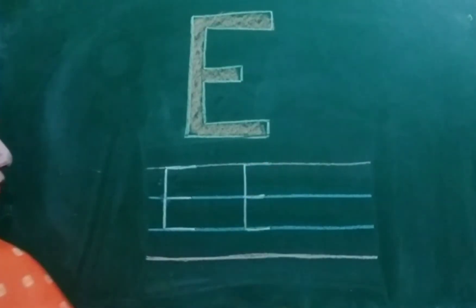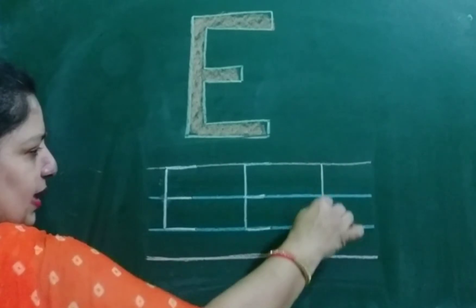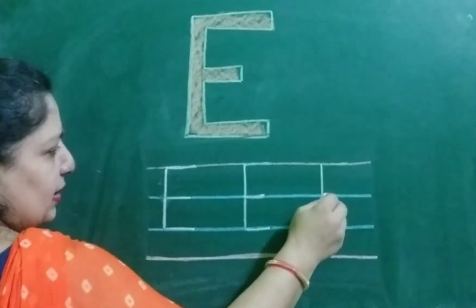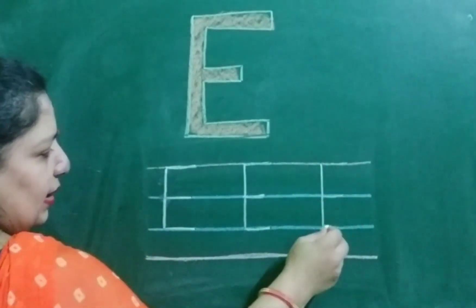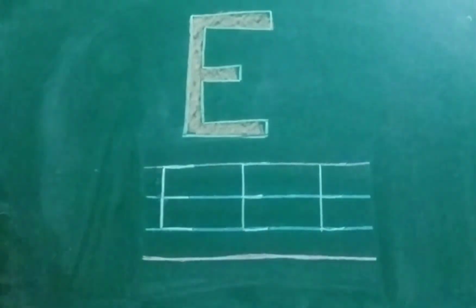E for elephant. Standing line, sleeping line, sleeping line, sleeping line. E.